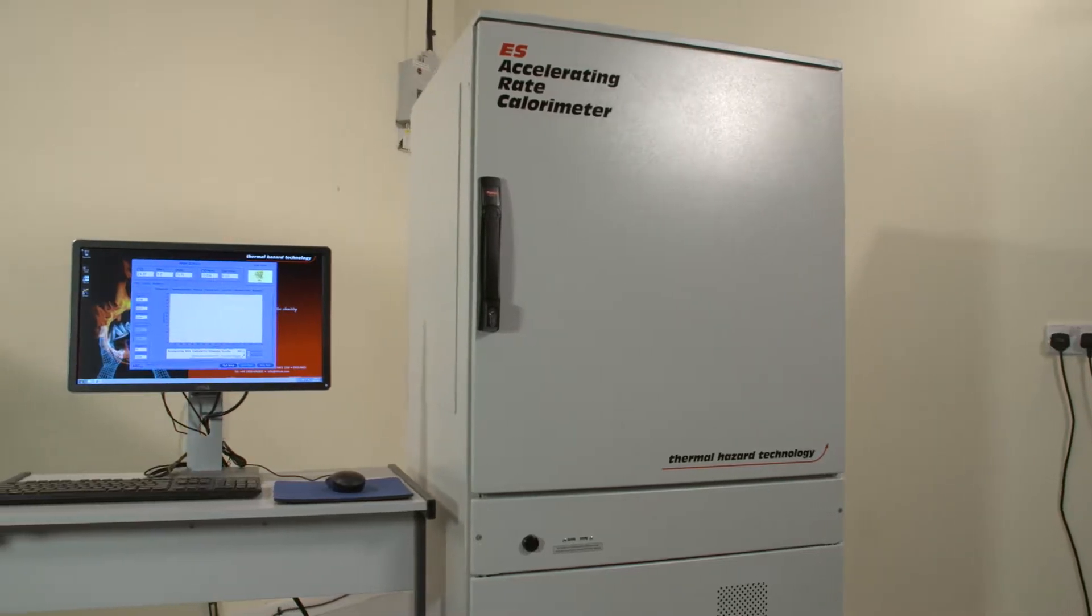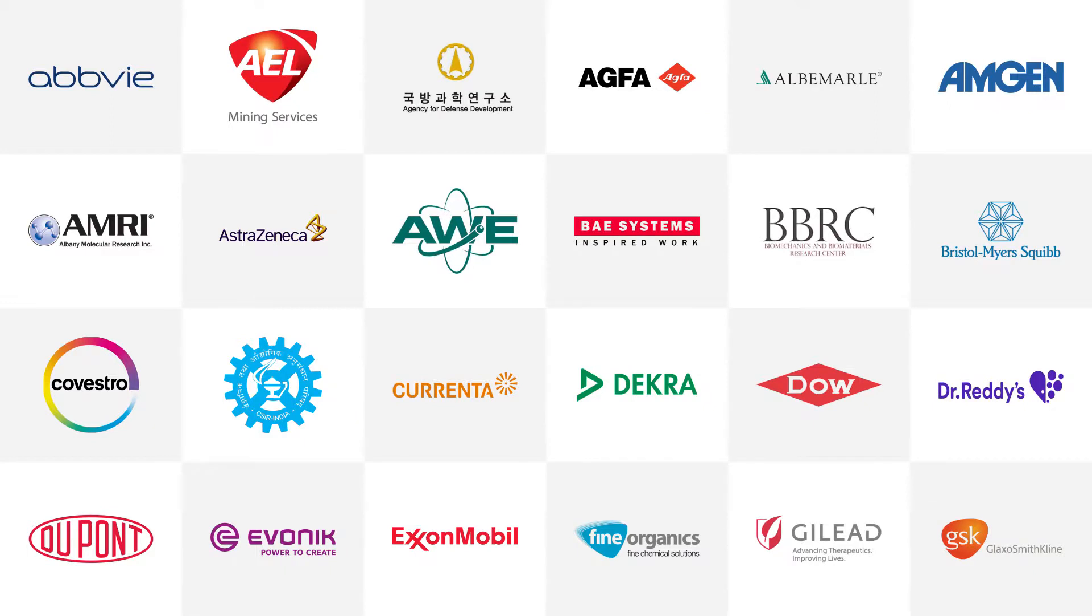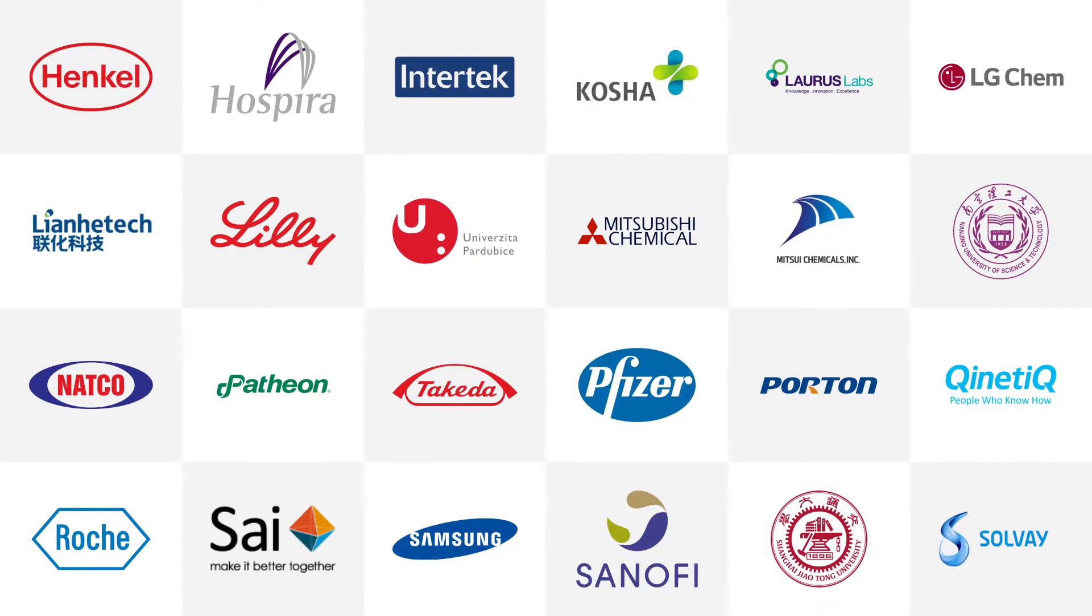The ES-Arc is a true accelerating rate calorimeter from THT, the world leading supplier of safety calorimeters. The world's benchmark product, it's used in over 300 labs globally.